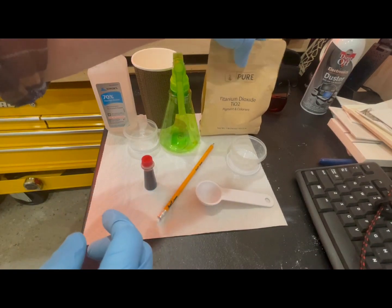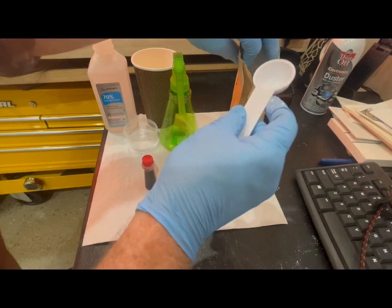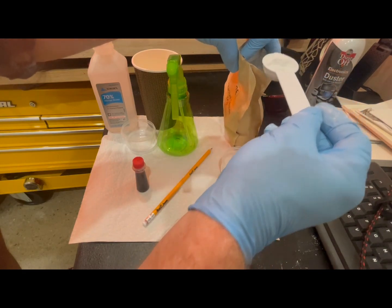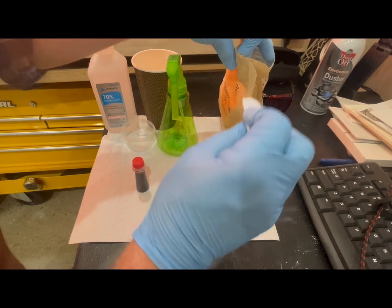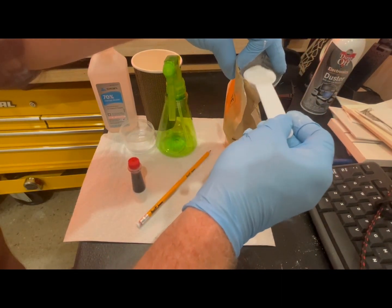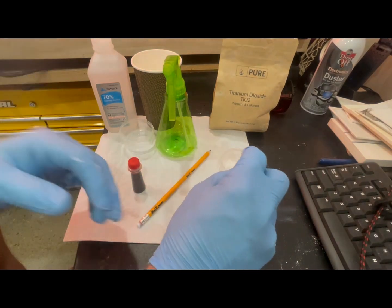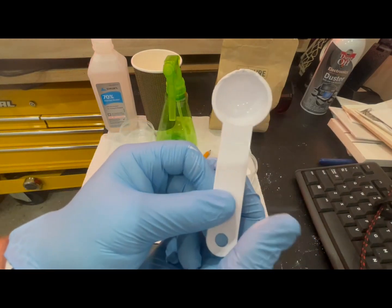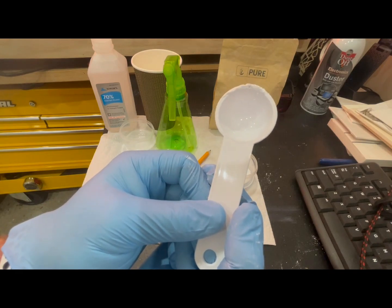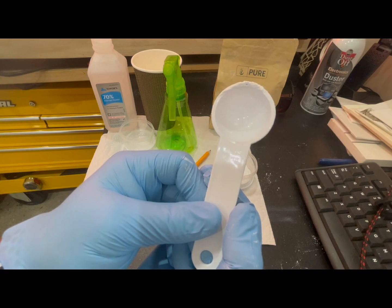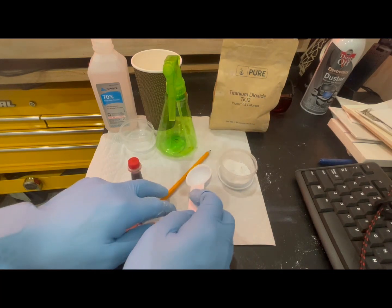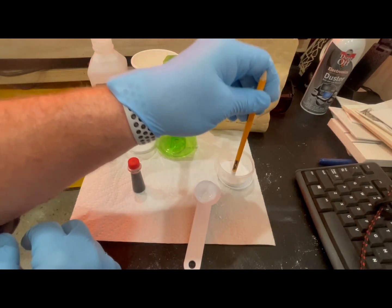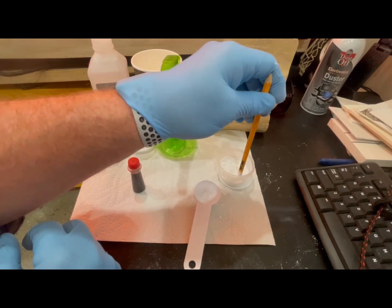I will use two level scoops of the titanium dioxide. I am using a one tablespoon size scoop or 15ml. I use the pencil to go through and smash down any large pieces so that I don't get big chunks in the base of the spray bottle that could potentially cause problems with the nozzle.